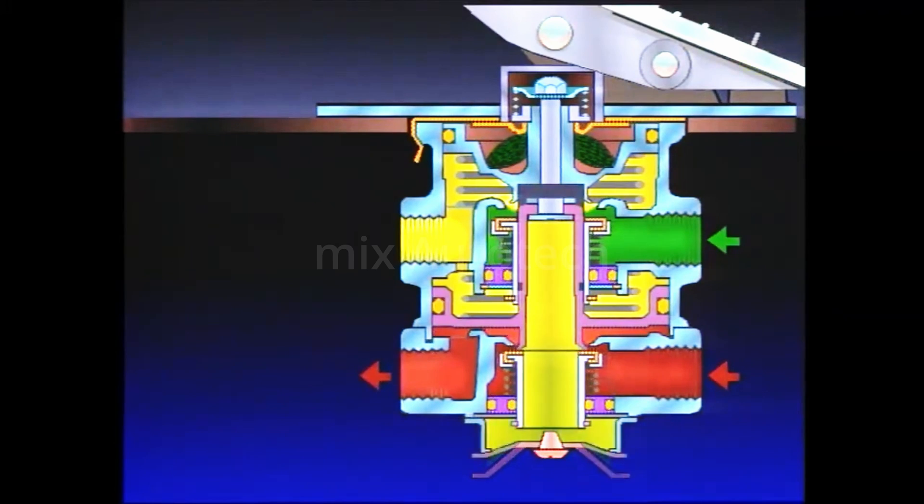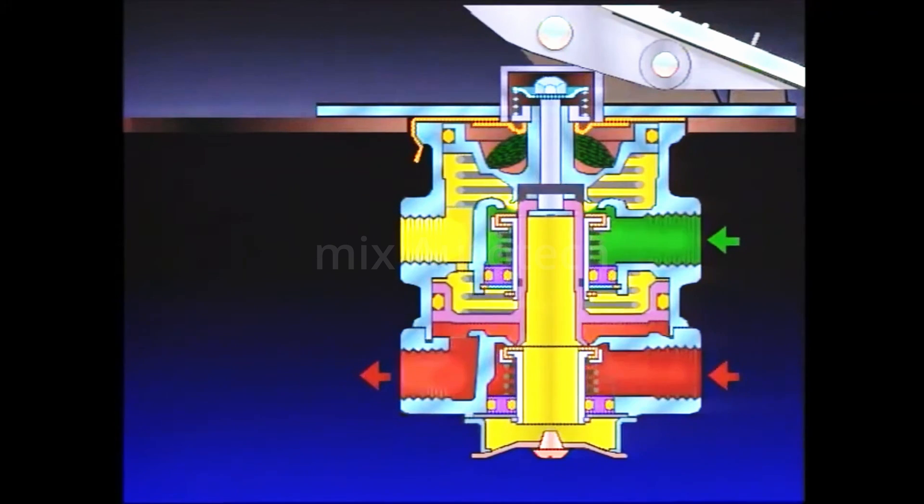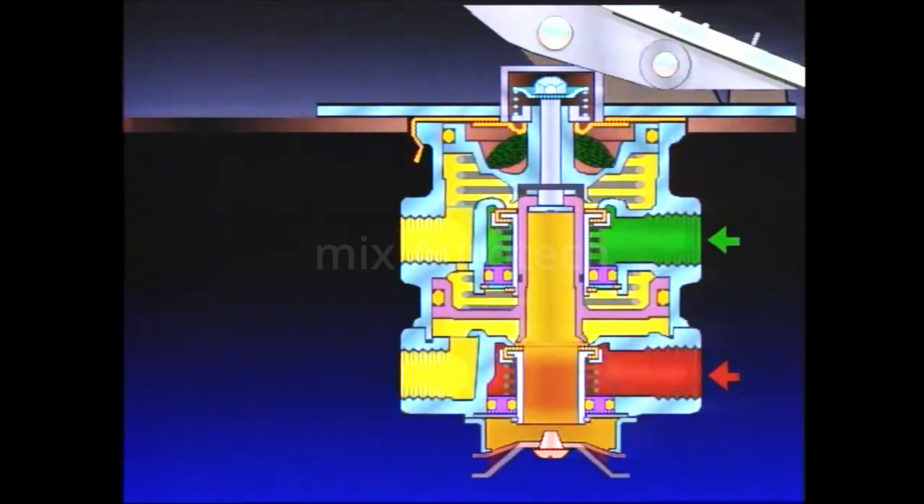As the air is exhausted from the primary side of the relay piston, air pressure and spring load move the relay piston, opening the secondary exhaust.